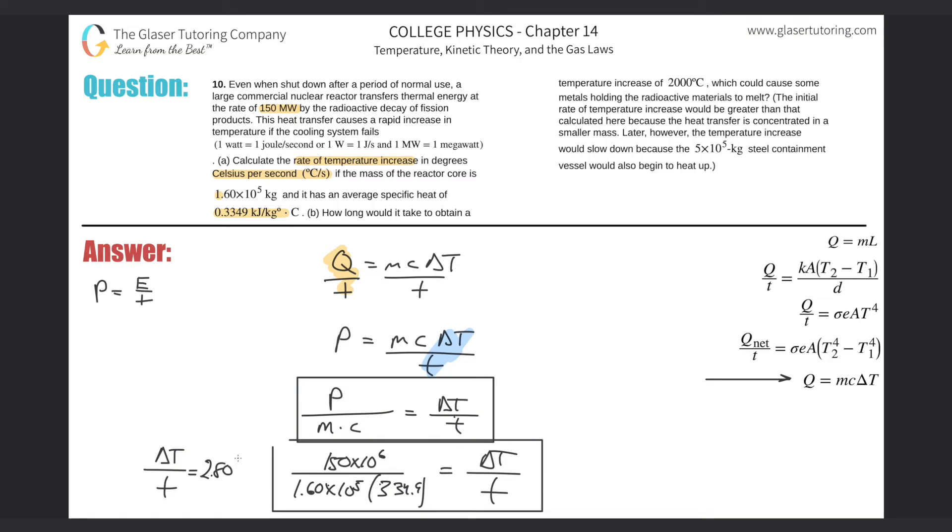degrees Celsius. So that doesn't take long for it to overheat, right? 10 seconds, that's 28 degrees Celsius. 100 seconds, that's 280 degrees Celsius. 100 seconds isn't even two minutes. So you can kind of see how this can get out of control quite quickly.